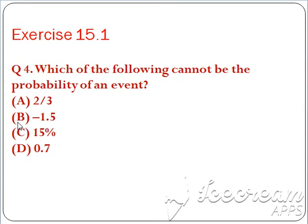If you see option B, that is -1.5. We know that probability can never be less than 0. So in this way, if you think, then this option B is wrong.